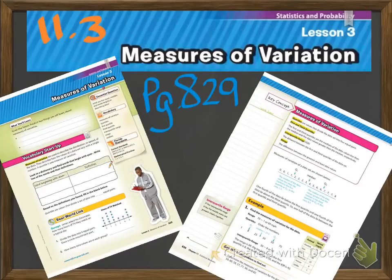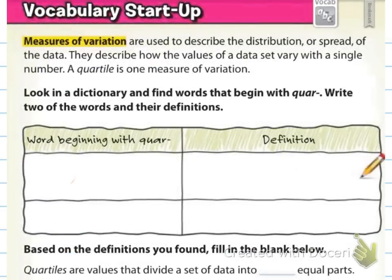Alright, I hope you enjoyed watching the exam solutions video. I just want to go over a couple more things in this video but I'll try to keep it short. We've got section 11.3, starting on page 829. You will be taking notes in the book; you should have taken notes on a separate piece of paper for the British guy. Starting with vocabulary: measures of variation are used to describe the distribution or spread of the data. A quartile is one measure of variation.